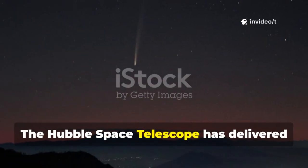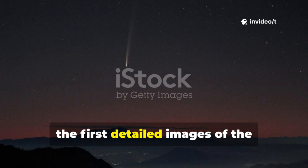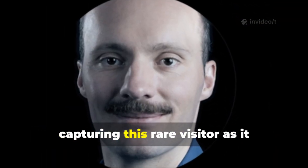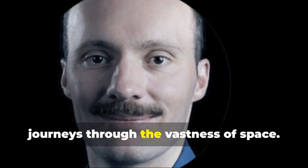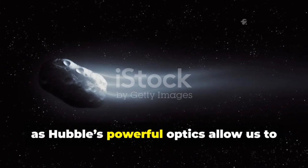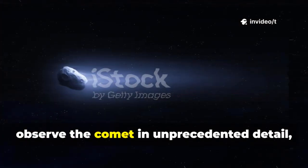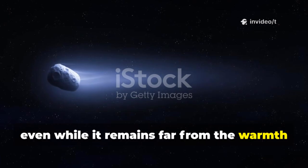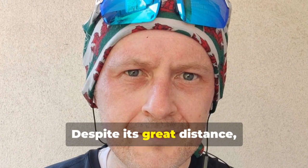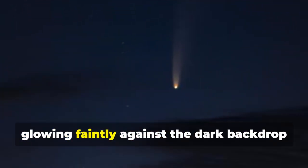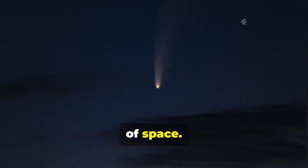The Hubble Space Telescope has delivered the first detailed images of the interstellar comet known as 3I Atlas, capturing this rare visitor as it journeys through the vastness of space. These images mark a significant milestone as Hubble's powerful optics allow us to observe the comet in unprecedented detail, even while it remains far from the warmth of the sun. Despite its great distance, the comet is already showing signs of activity, glowing faintly against the dark backdrop of space.